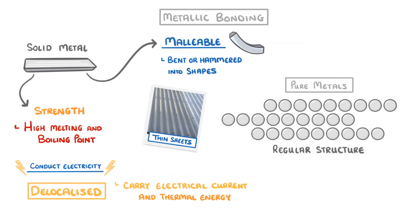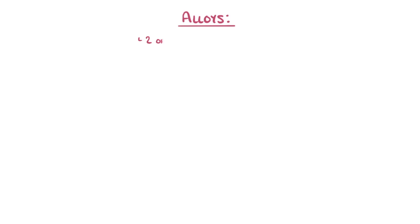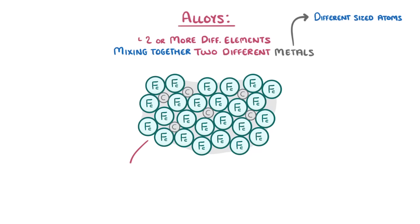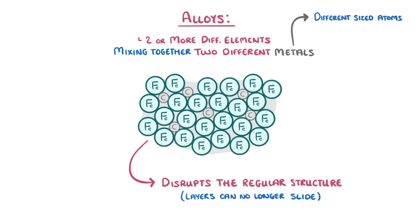At least that's the case for pure metals. If we want a harder metal that won't bend so easily, then we can make alloys, which contain two or more different elements. We make these either by mixing together two different metals, or sometimes a metal and a nonmetal, and we generally pick elements that have different sized atoms. The combination of different sized atoms disrupts the metal's regular structure and means that the layers can no longer slide over one another, making the alloy much harder than pure metal.